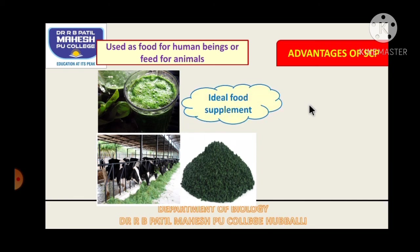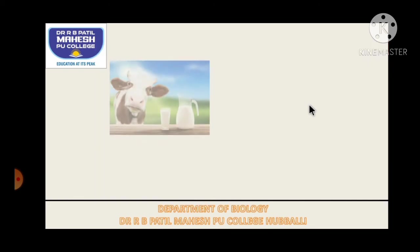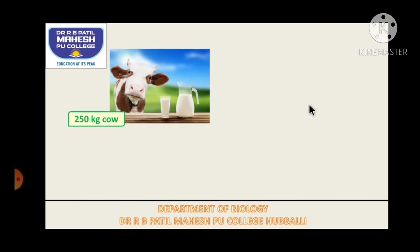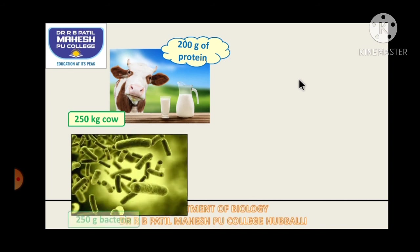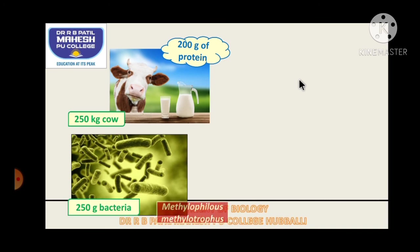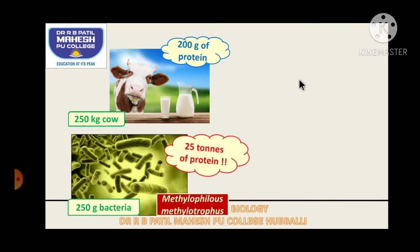It is an ideal food supplement for humans and also for cattle to increase milk production. It has been estimated that a 250 kg cow produces only 200 grams of protein per day, whereas microorganisms weighing around 250 grams — such as Methylophilus methylotrophus — can be expected to produce 25 tons of protein per day.